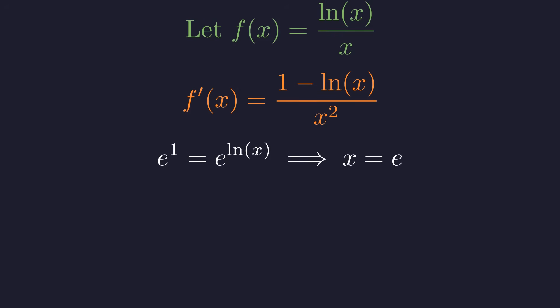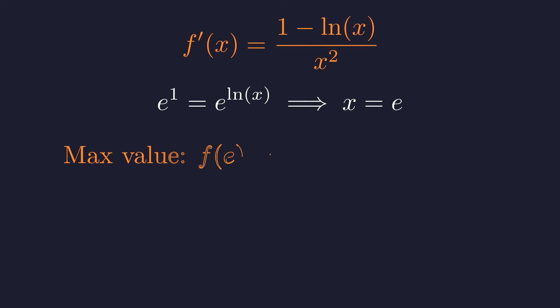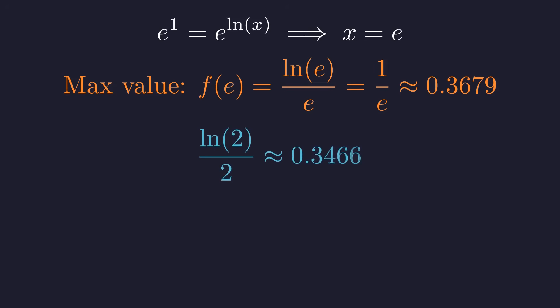This critical point turns out to be a global maximum. The peak value of our function is 1 over e, which works out to be approximately 0.3679. Now what about our target value, the constant on the right side of our equation? The natural log of 2 divided by 2 comes out to approximately 0.3466.